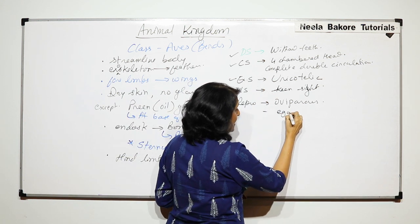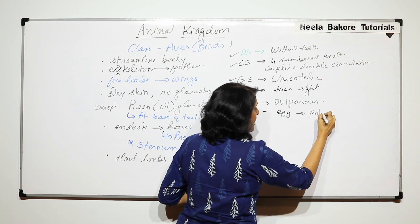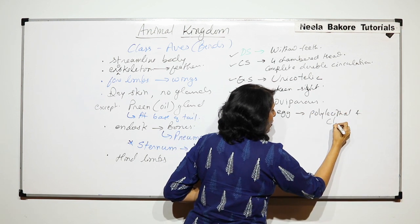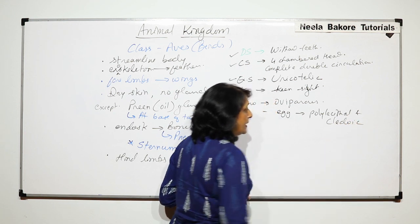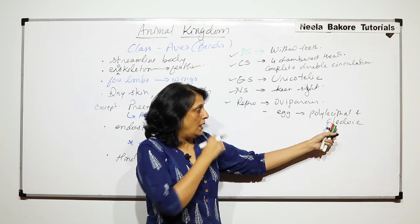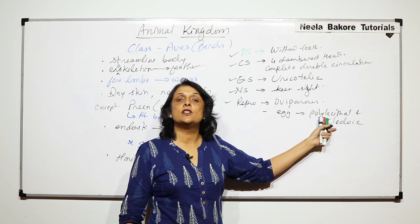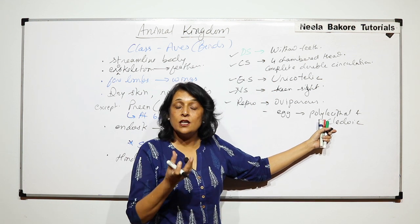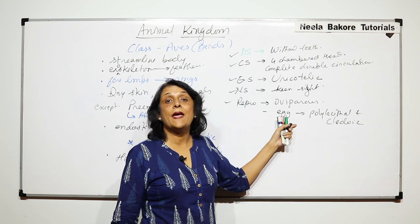The egg is polylecithal and cleidoic. That means polylecithal is sufficient yolk is present. And cleidoic egg is which is self sufficient egg with protective shell. So those kind of eggs are present.